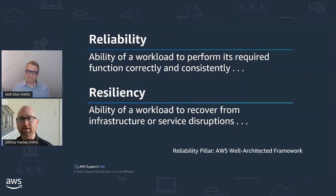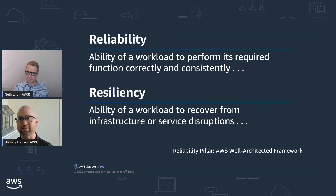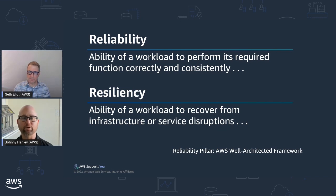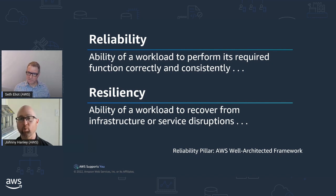Reliability and resiliency are very intertwined but subtly different. Reliability is the ability of a workload to perform its required function correctly and consistently — we want to perform as expected all the time. Resiliency is the ability of a workload to recover from infrastructure or service disruptions. Resiliency needs to be built in so that your workload can be reliable — whenever there's a component failure, you can automatically recover and continue to maintain your reliability.